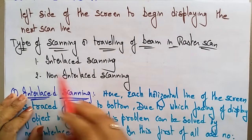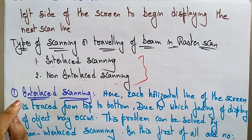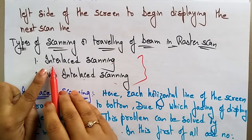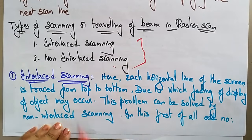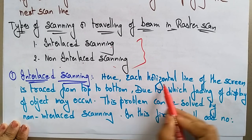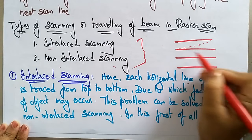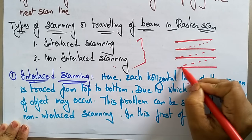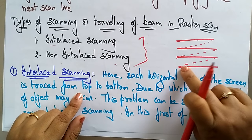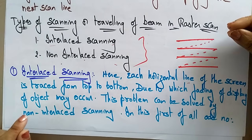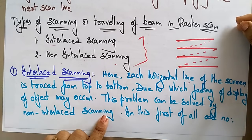Now let's see the types of scanning in raster scan. There are two ways: interlaced scanning and non-interlaced scanning. In interlaced scanning, each horizontal line of the screen is traced from top to bottom, due to which the fading of the display of an object may occur. This problem can be solved by non-interlaced scanning.